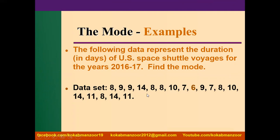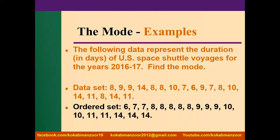Here we have a data set — it could be anything: hospitals, number of children in a class, height, weight, or anything. Here we are representing the duration of days of US space shuttle voyages for the year 2016-17. Now you see we have 8, 9, 9, 14, 8, 8, 10, etc. Now what is the mode in it? We see we have 8 appearing 1, 2, 3, 4, and 5 times. Similarly 9 appears 1, 2, 3 times. 14 appears 1, 2, 3 times. Then 11 appears 1 and 2 times. So we have to figure out which value is the mode. First it was a little difficult to get all the values, so what we do? We arrange it in ascending order.